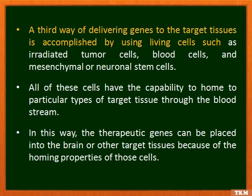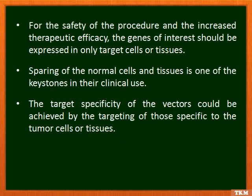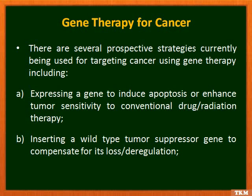These cells have the capability to home to particular target tissues through the bloodstream, allowing therapeutic genes to be placed into the brain or other target tissues via the homing properties of those cells. For safety and increased therapeutic efficacy, the genes of interest should be expressed only in target cells — sparing normal cells and tissues. Target specificity of the vectors can be achieved by targeting molecules specific to tumor cells or tissues.